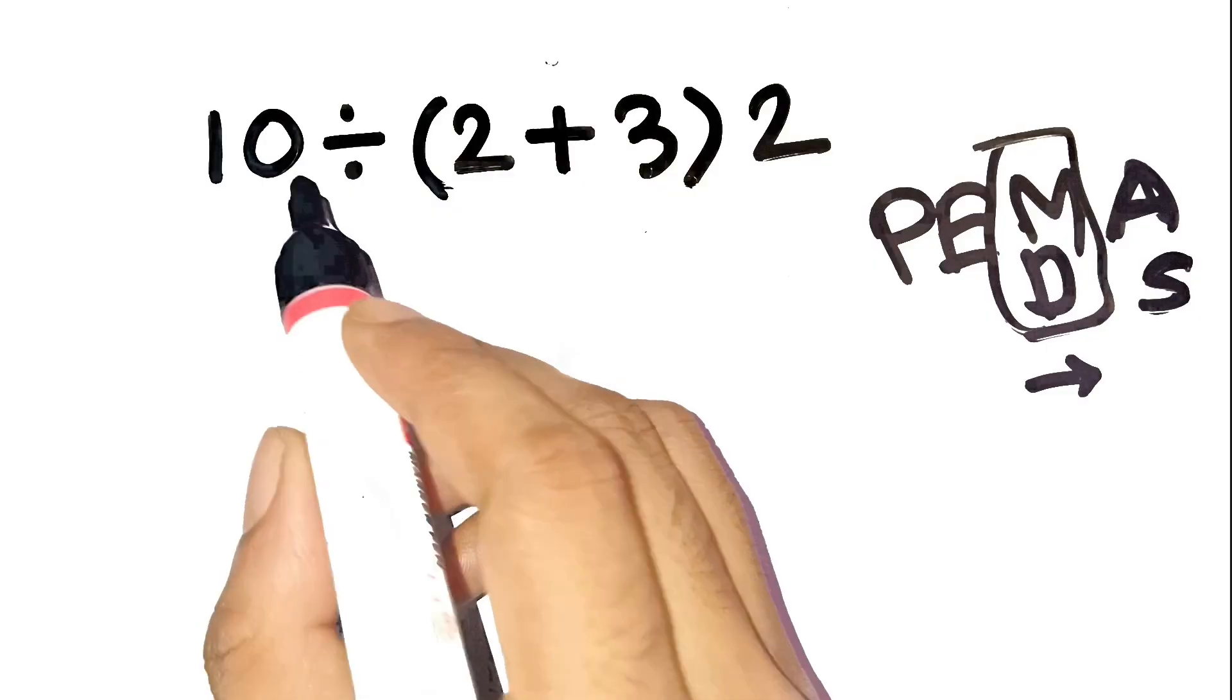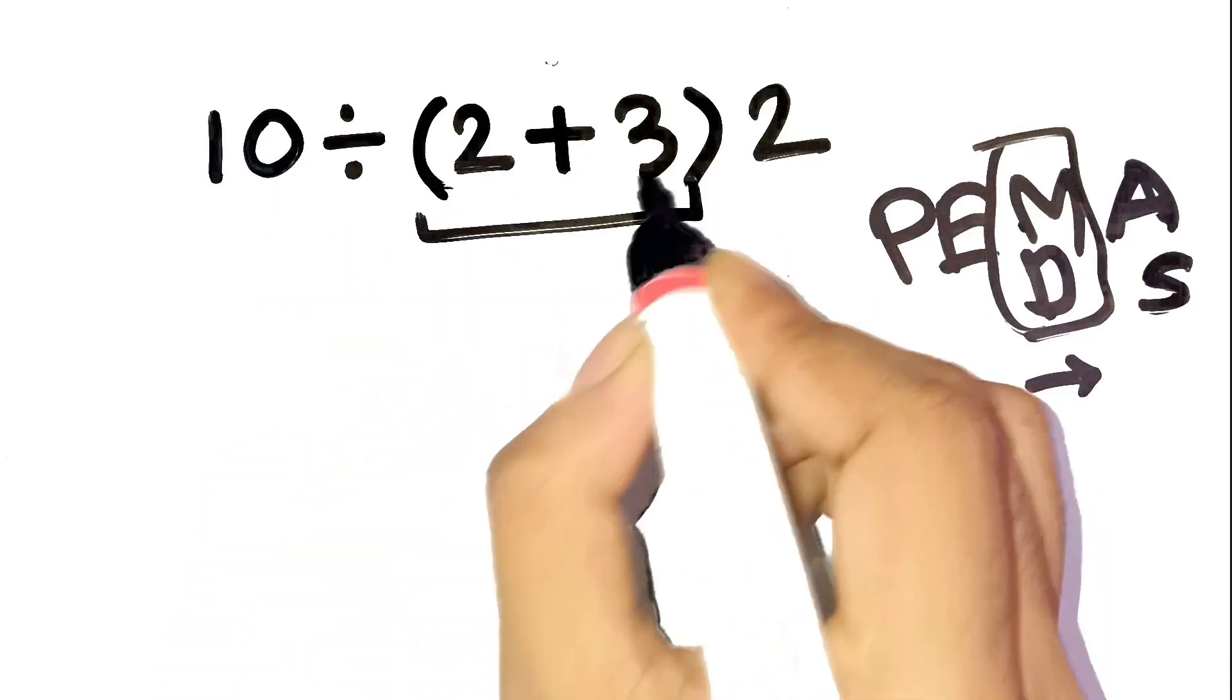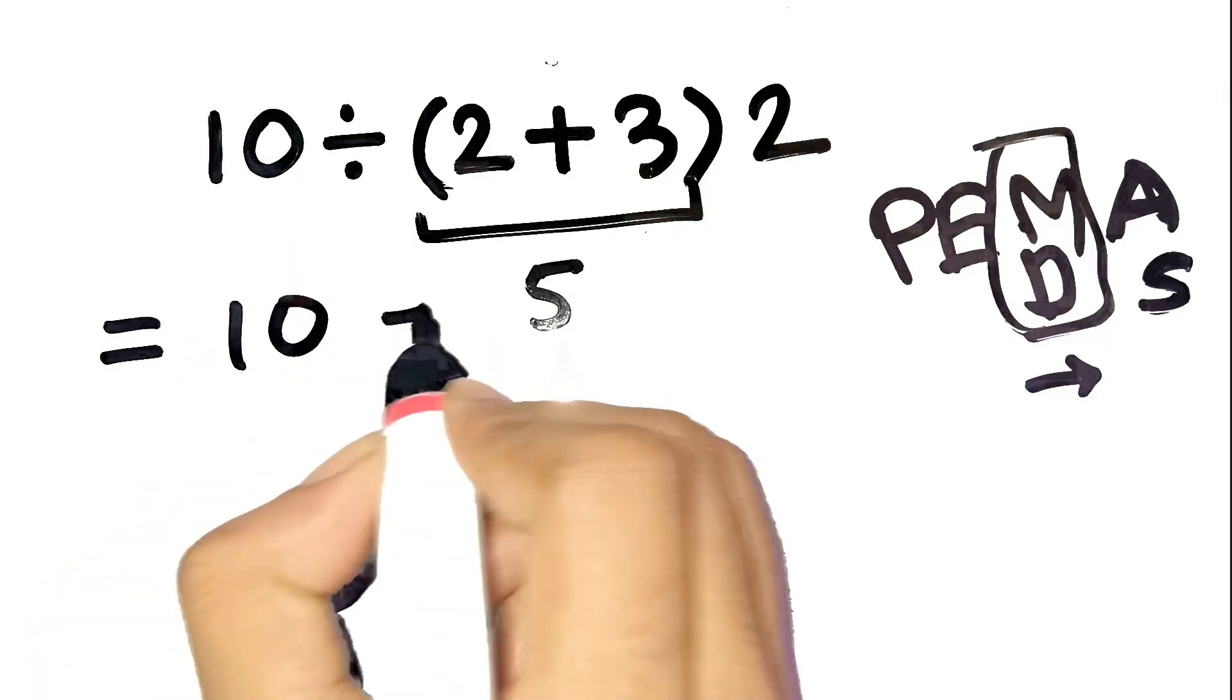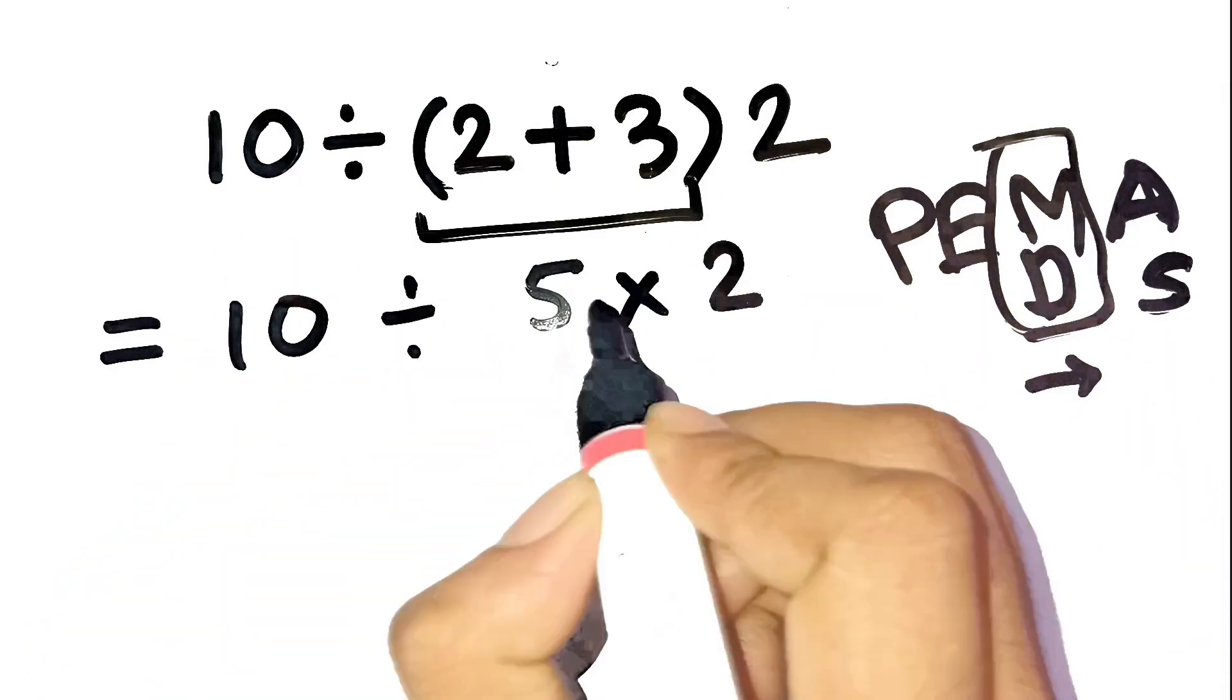So first, inside the parenthesis, 2 plus 3 equals 5. Got it. Now the expression is 10 divided by 5 times 2.